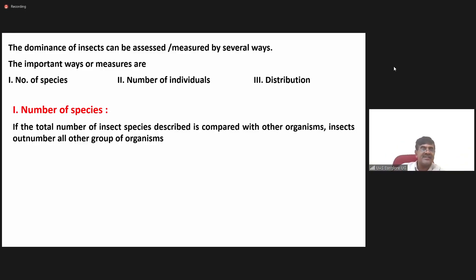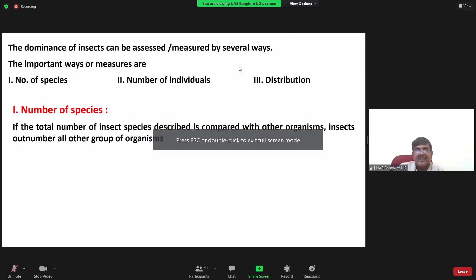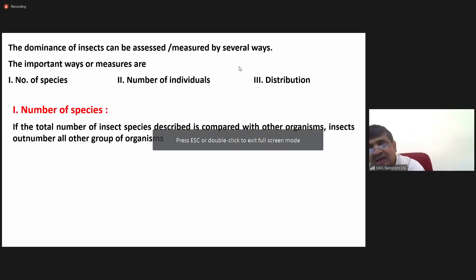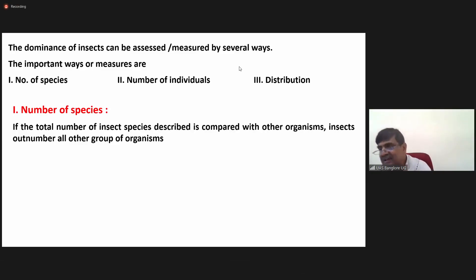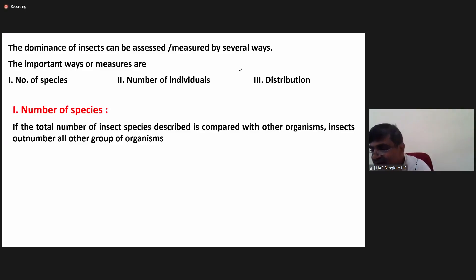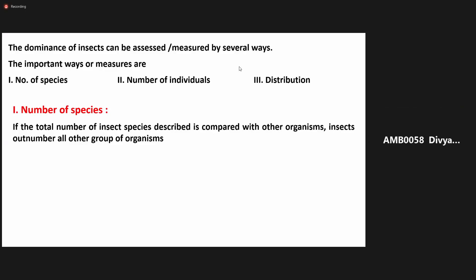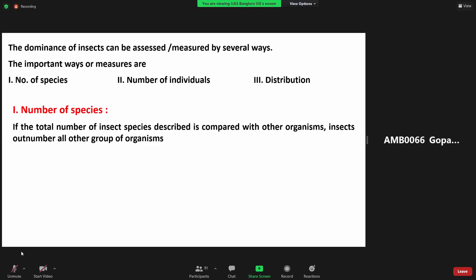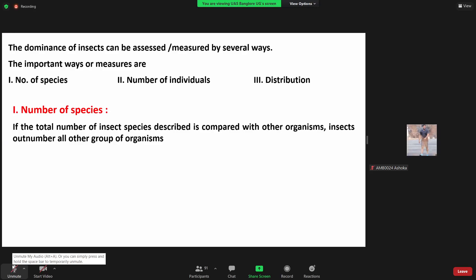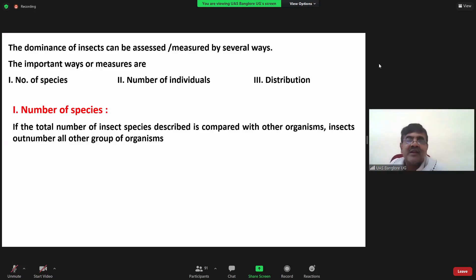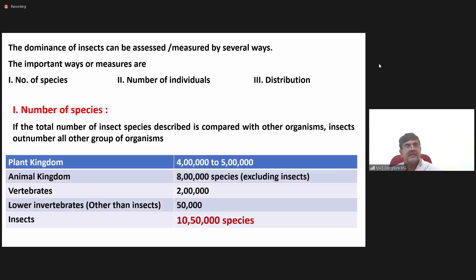The first parameter is number of species. If the total number of insect species described is compared with other organisms, insects outnumber all others. Around 10 lakh 50,000 species have been reported so far.